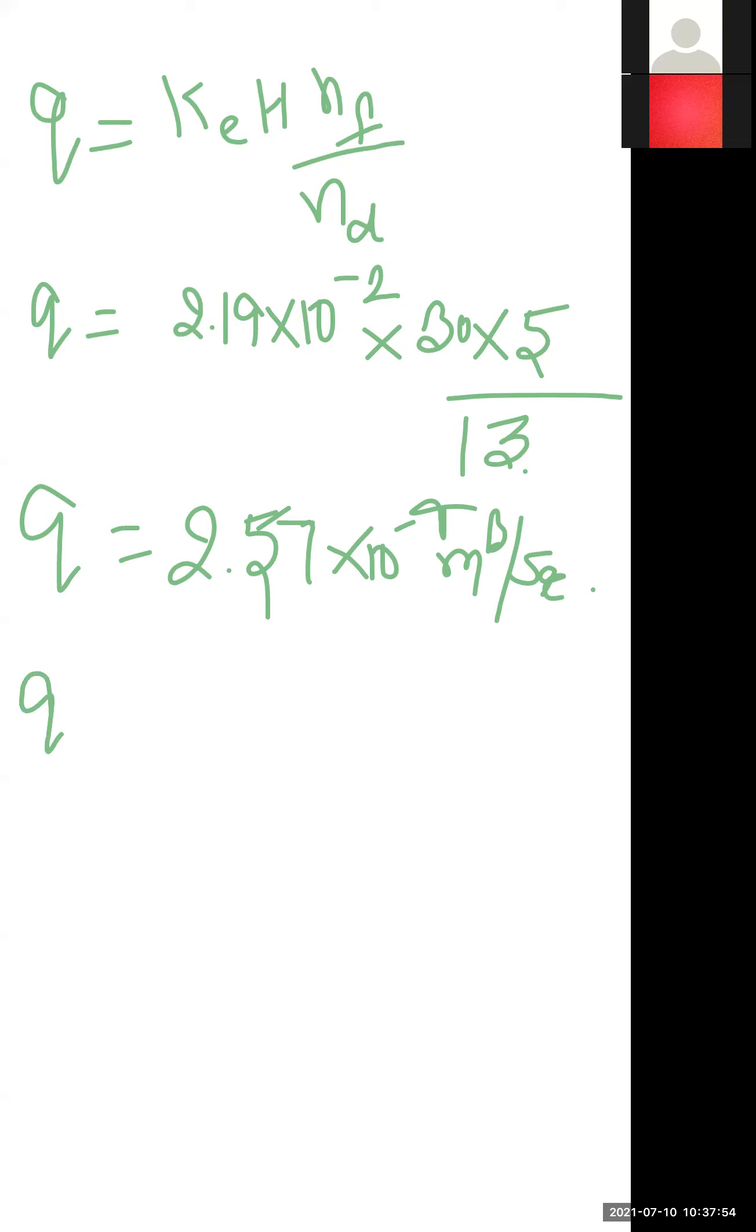Also this value can be written as 0.2527 liters per second. So this is the seepage per unit length of dam.